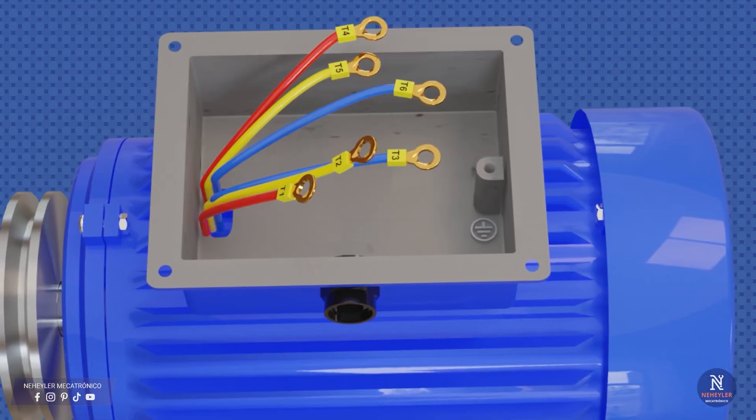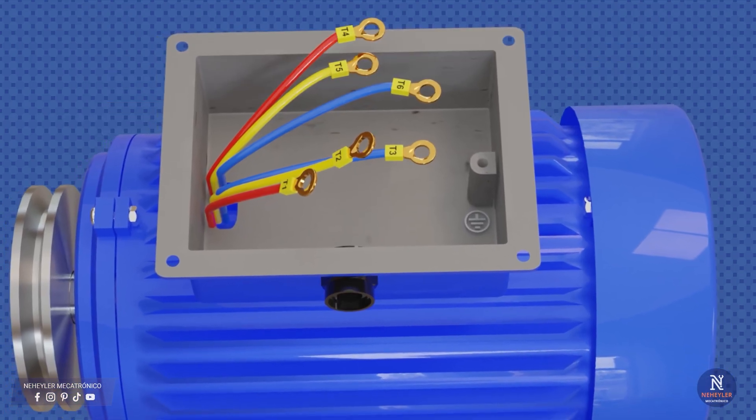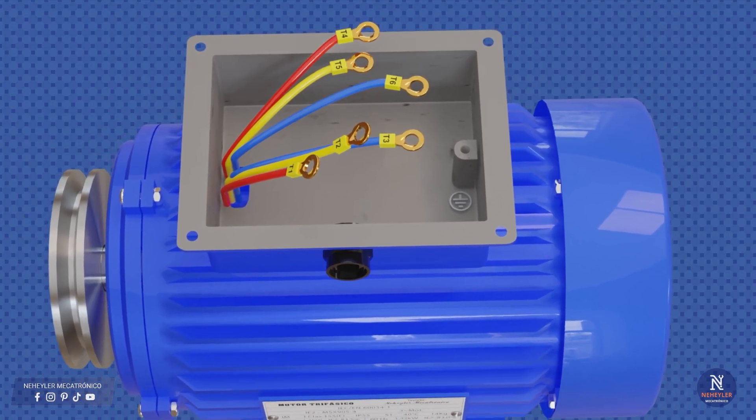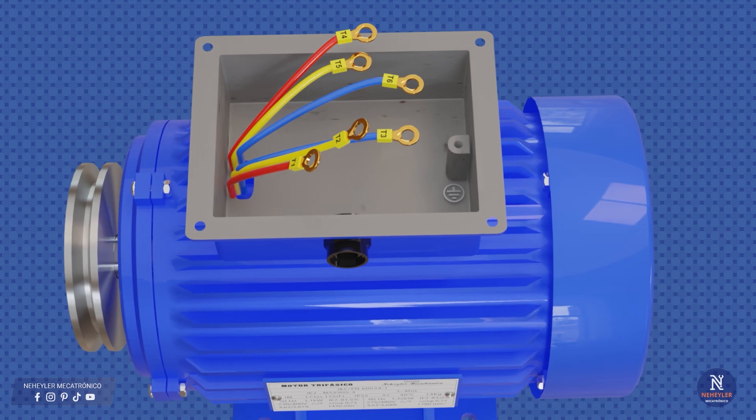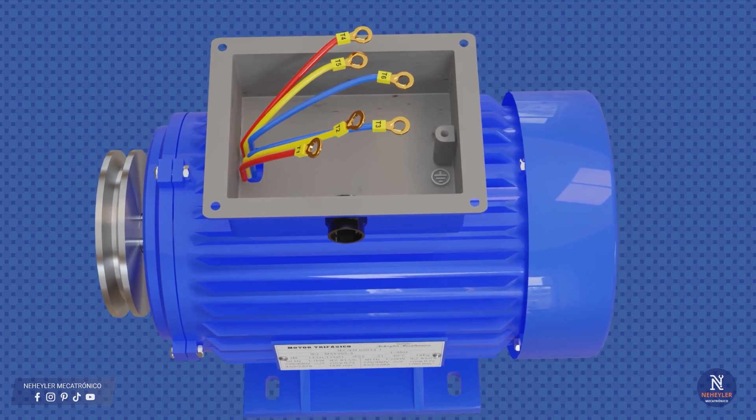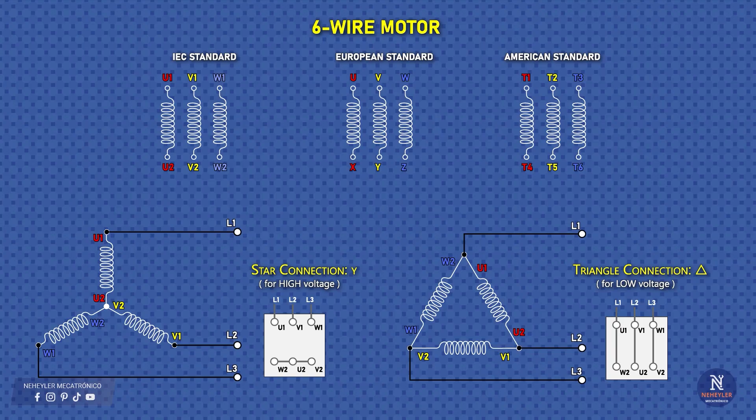Let's take as an example a three-phase motor with six terminals or six wires. Inside we find three windings, and each one has two terminals, which adds up to a total of six leads in the terminal box. Depending on the standard, the terminals or motor winding leads may be designated with letters or with numbers, but in essence they are all equivalent.